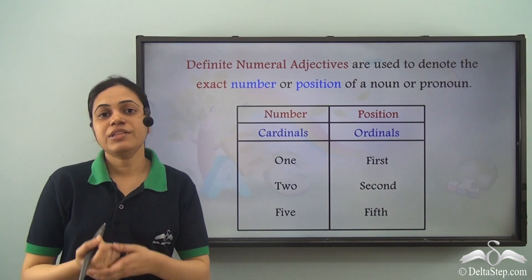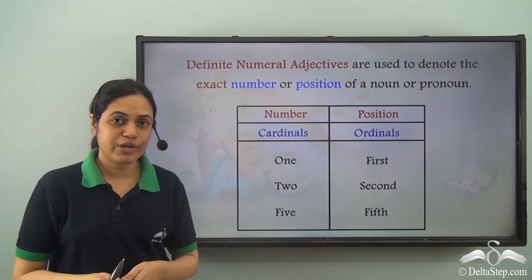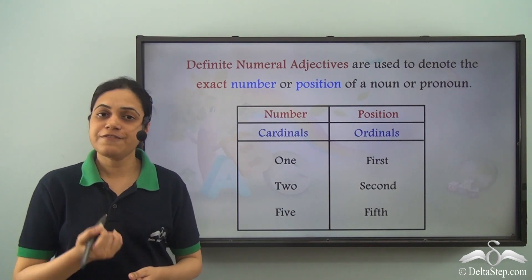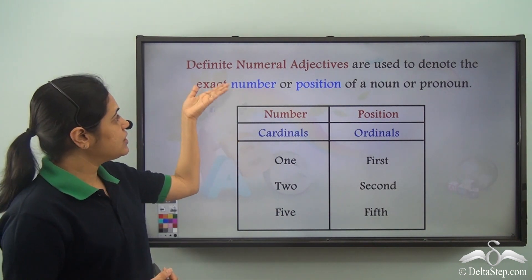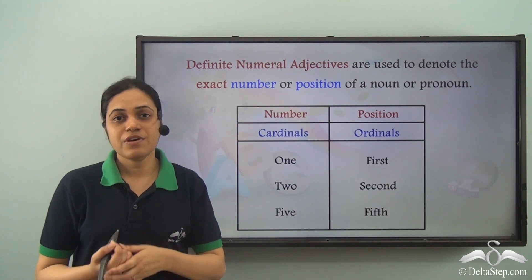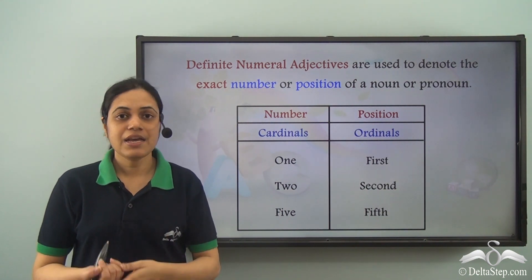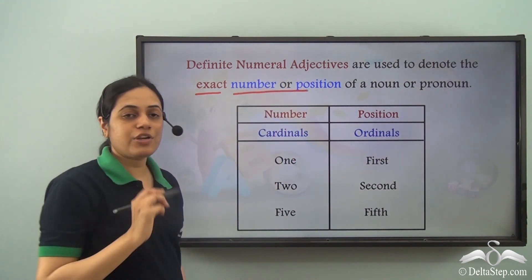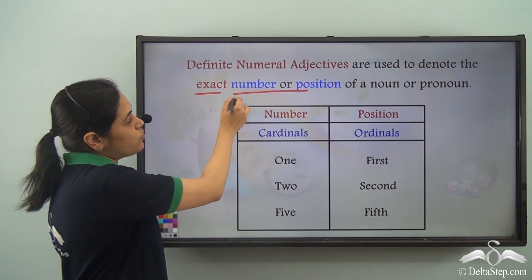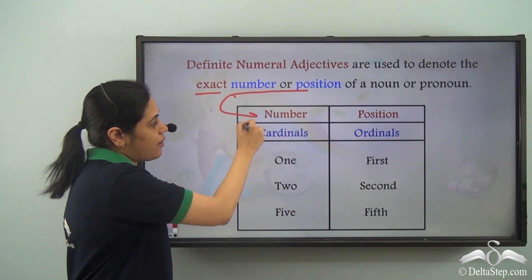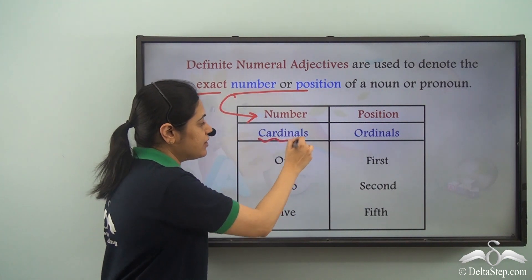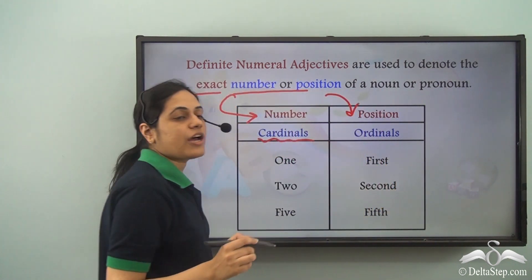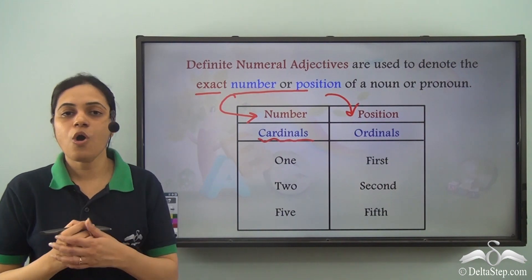So, there are three types of numeral adjectives or adjectives of number. The first among them is the definite numeral adjective, and they denote the exact number or position of a noun or pronoun. When they denote the exact number, they are called cardinals, and when they denote the exact position, they are called ordinals.